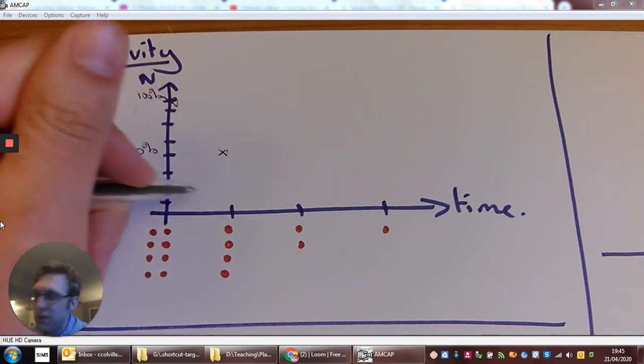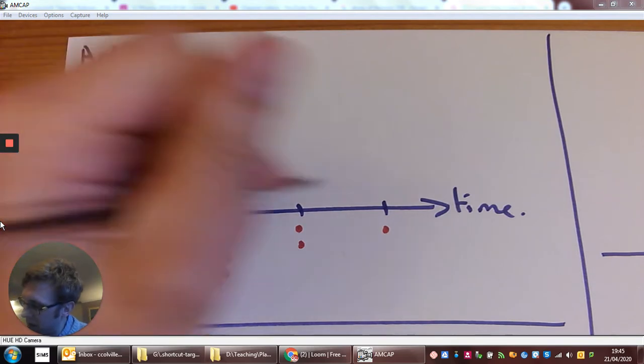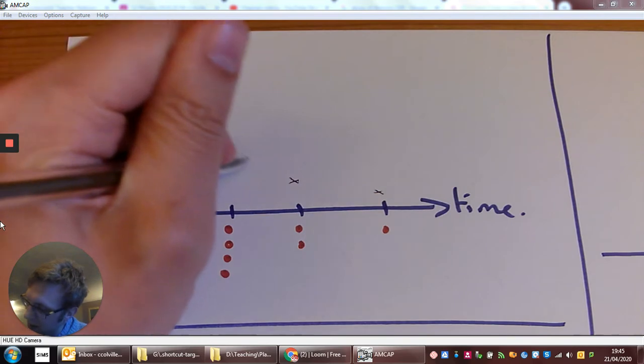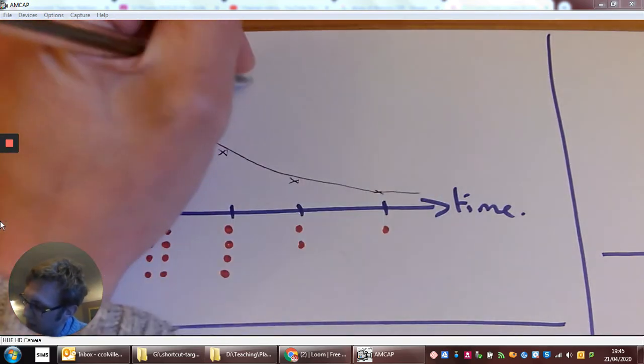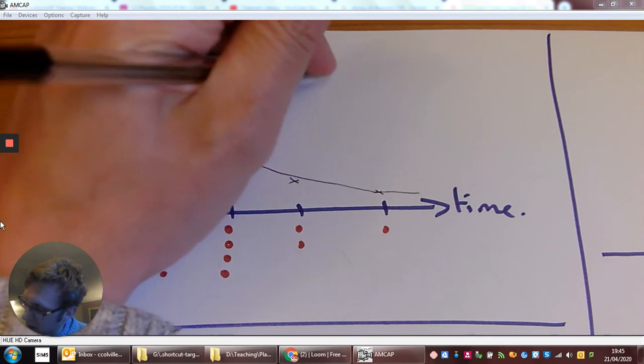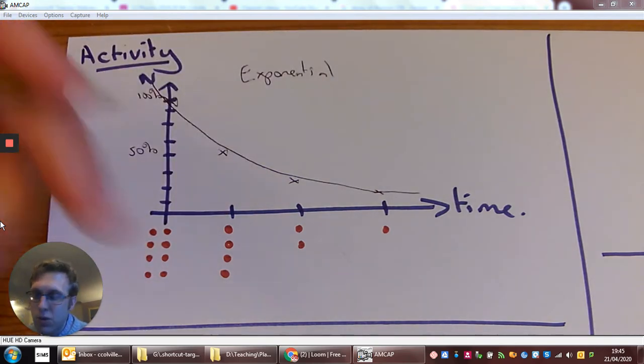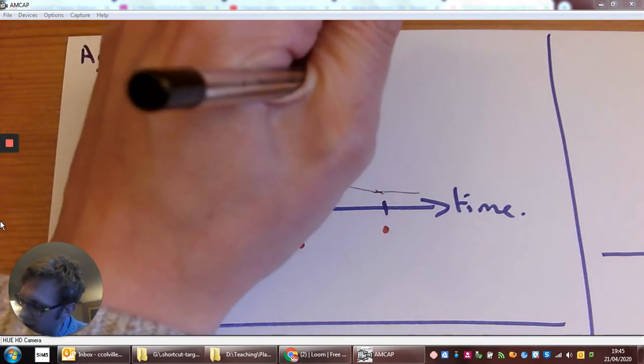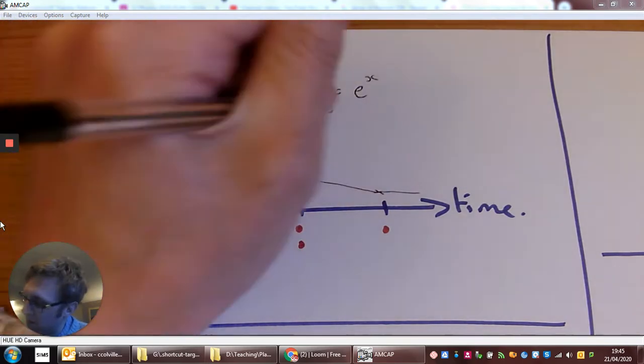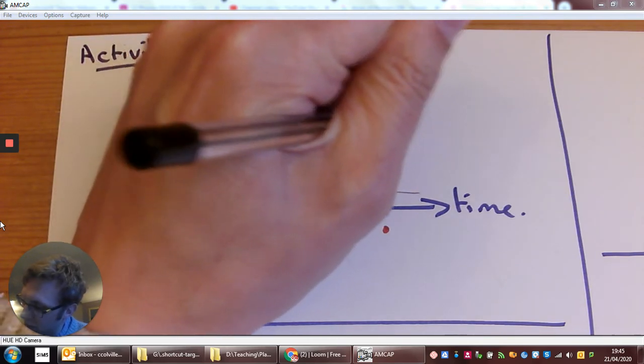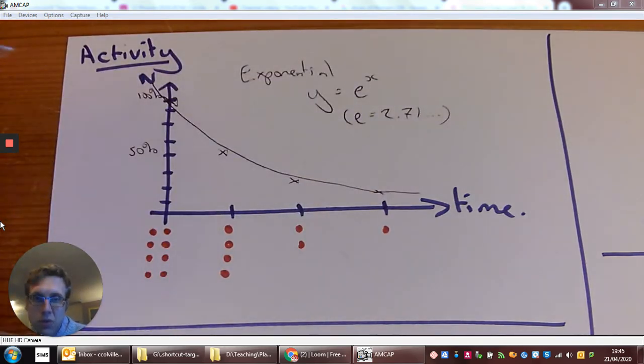After another half-life, they've gone down again. And after another half-life, they've gone down again. So what we get is this lovely exponential curve. What we mean by the exponential curve is it's following this mathematical exponential function, y equals e to the power of x, where e is the natural number, 2.71 and so on.